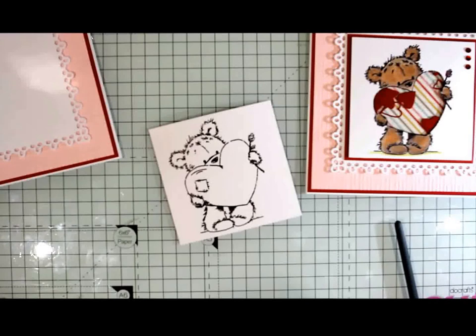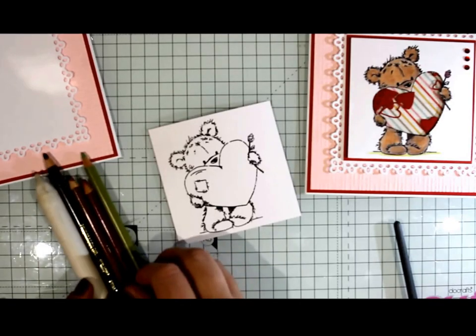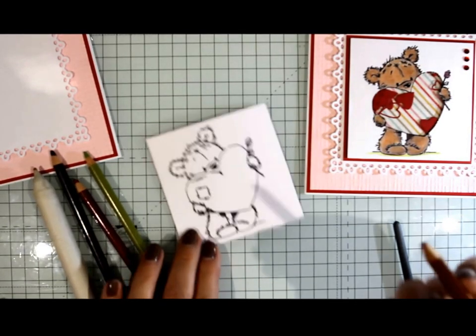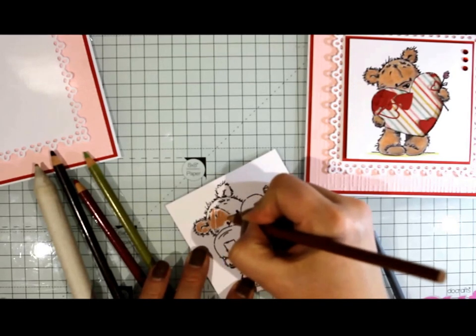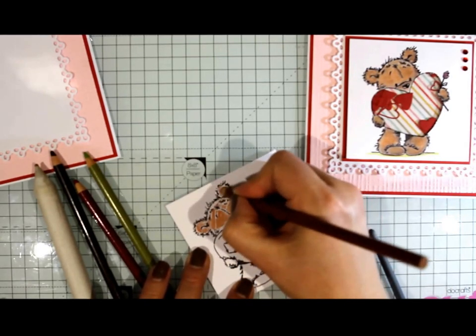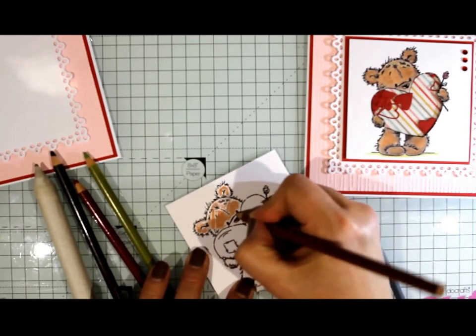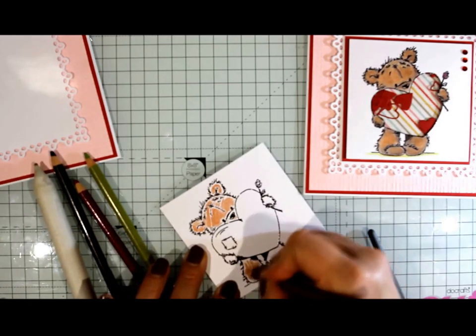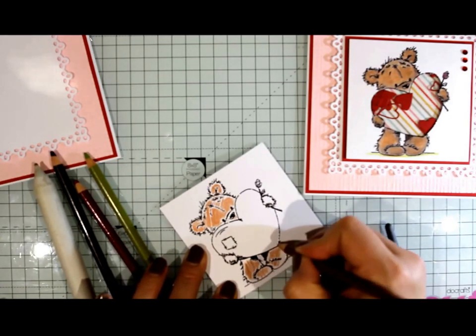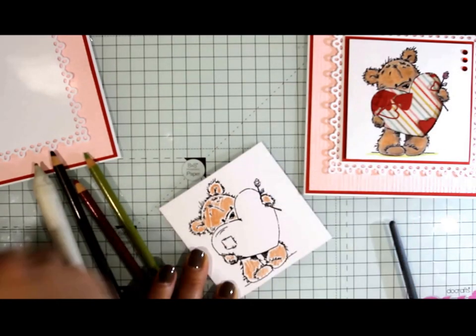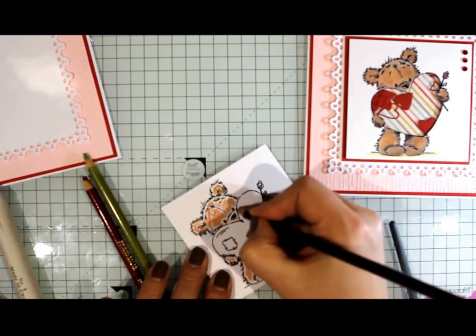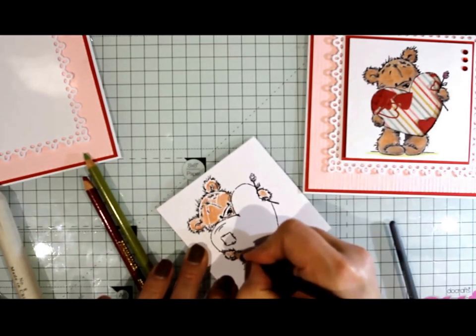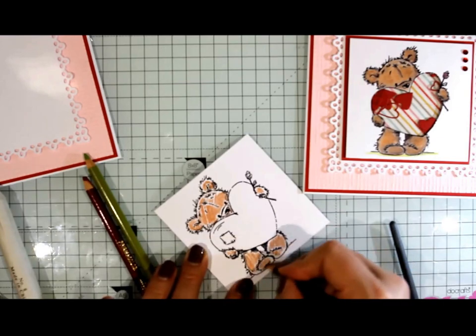Next thing you're going to do is color in your image. I'm just going to do some super simple coloring today. I'm just using my Prismacolor pencils, nothing too fancy. Just going all over with the brown, really quick. You can see I'm not taking any time at all to do this.